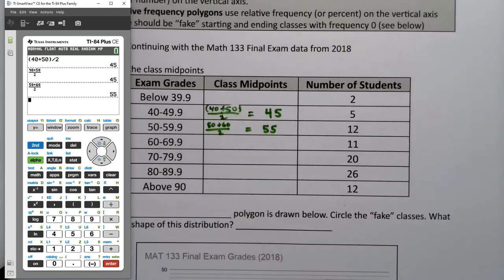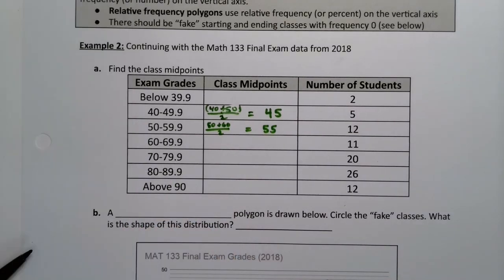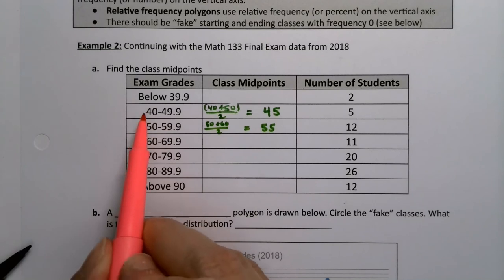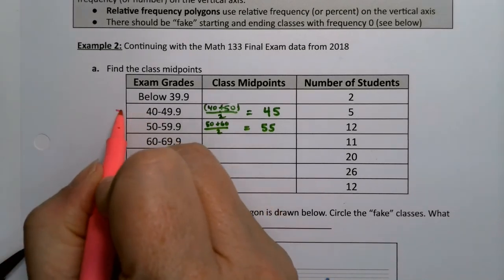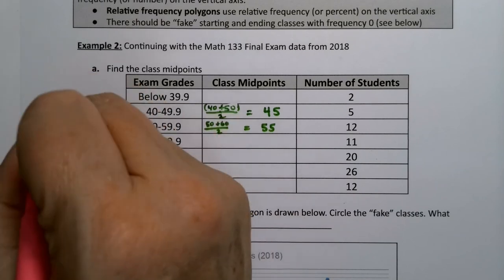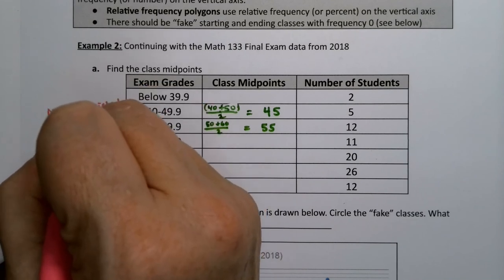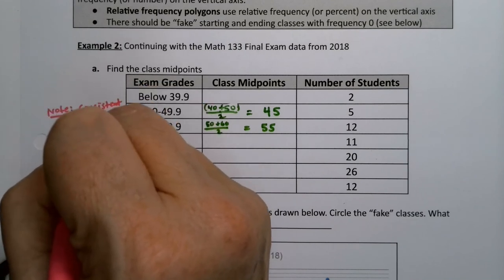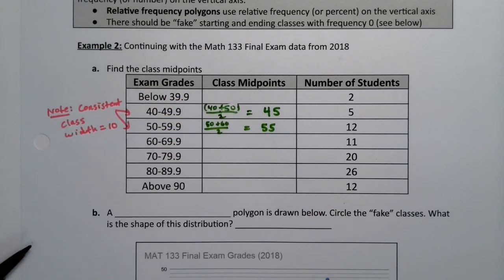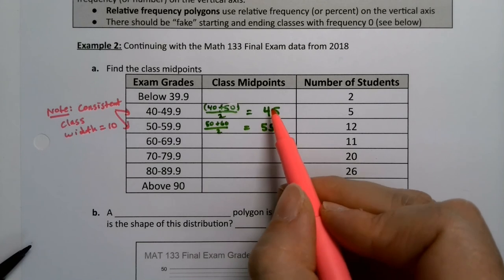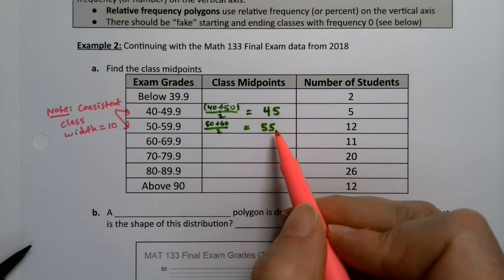If you look here on the left-hand side, you can see, and we've already looked at this problem, that there's a consistent class width. It's pretty obvious because it's 40, 50, 60, 70, 80. So you'll note there's a consistent class width for this problem, which we already learned how to find. It's 10. So what's another way I could find this 55? Well, if the class width is consistent, then I can say 45 plus 10 makes 55.